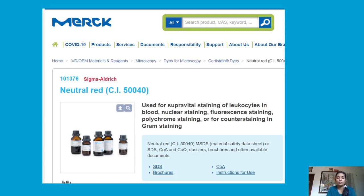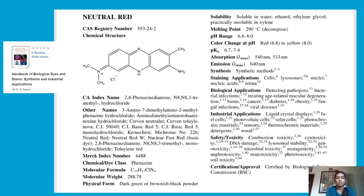From the Handbook of Biological Dyes and Stains by R.W. Satt-Mills, Neutral Red is described with its other names, molecular formula, molecular weight, and physical form — appearing as dark green or brownish black powder. Regarding solubility, it is soluble in water, ethanol, and ethylene glycol, practically insoluble in xylene. The melting point, pH range, and color change at pH are also given, confirming its use as a pH indicator.